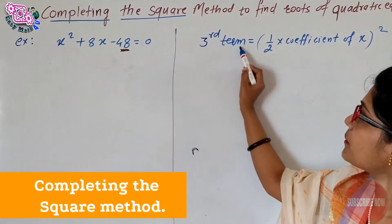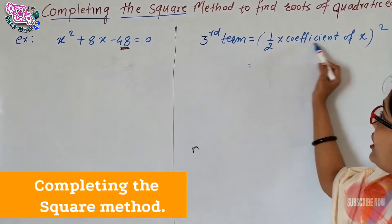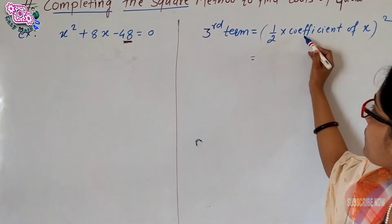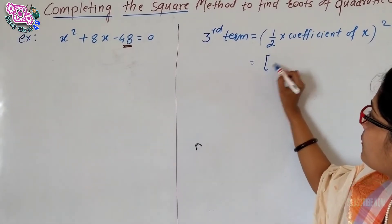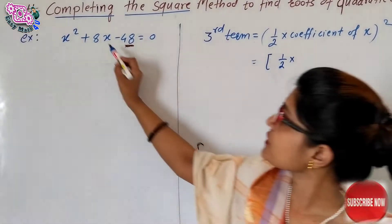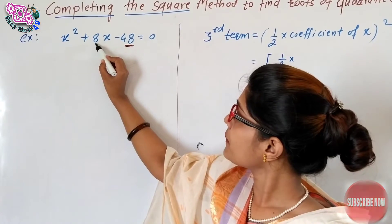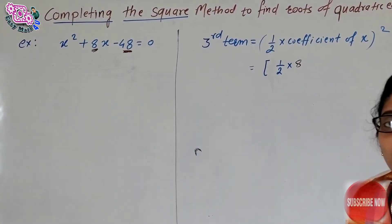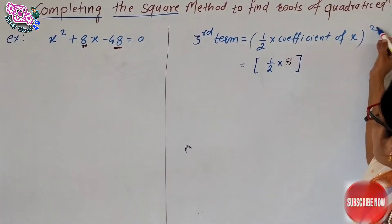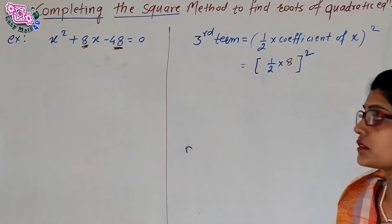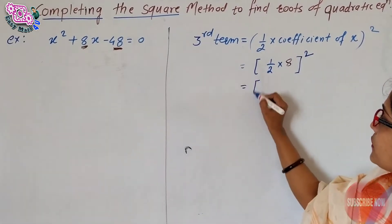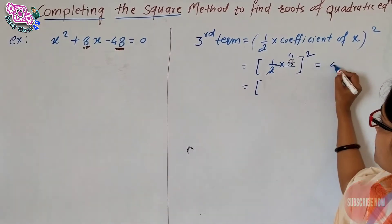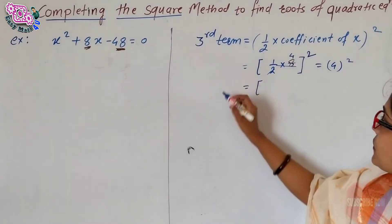The formula to use is: third term equals (1/2 multiplied by the coefficient of x), whole squared. The coefficient of x in our given equation is 8, so put 8 here: (1/2 × 8)² equals (4)² which equals 16.